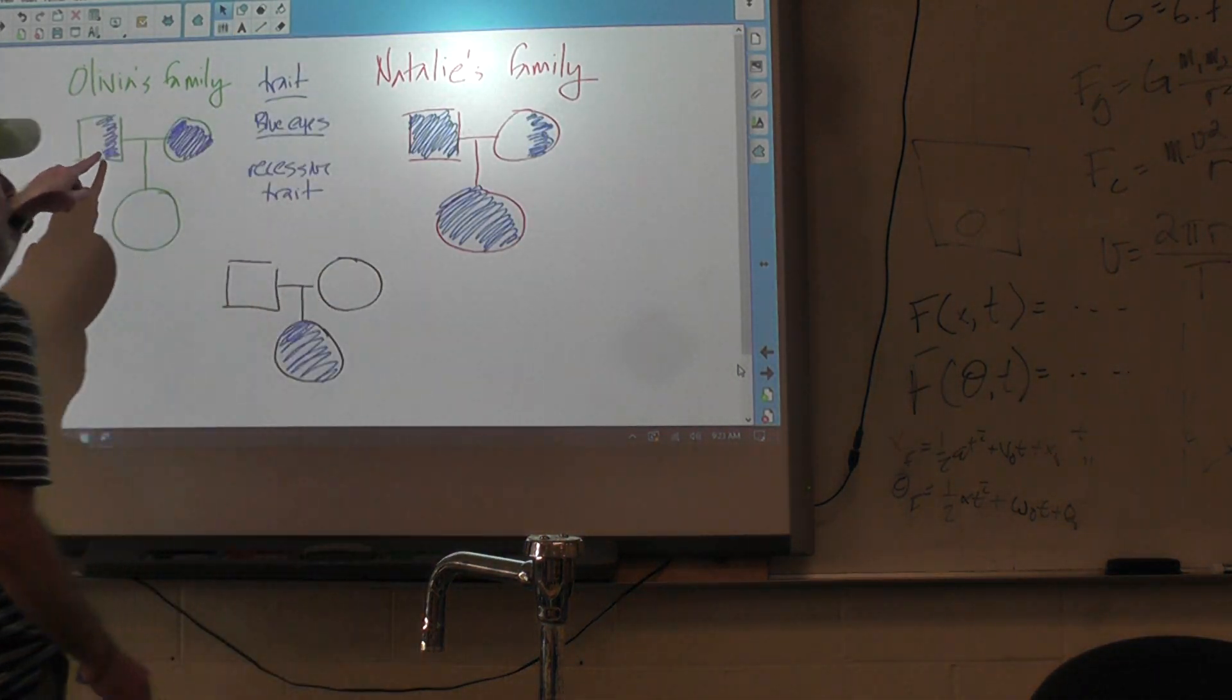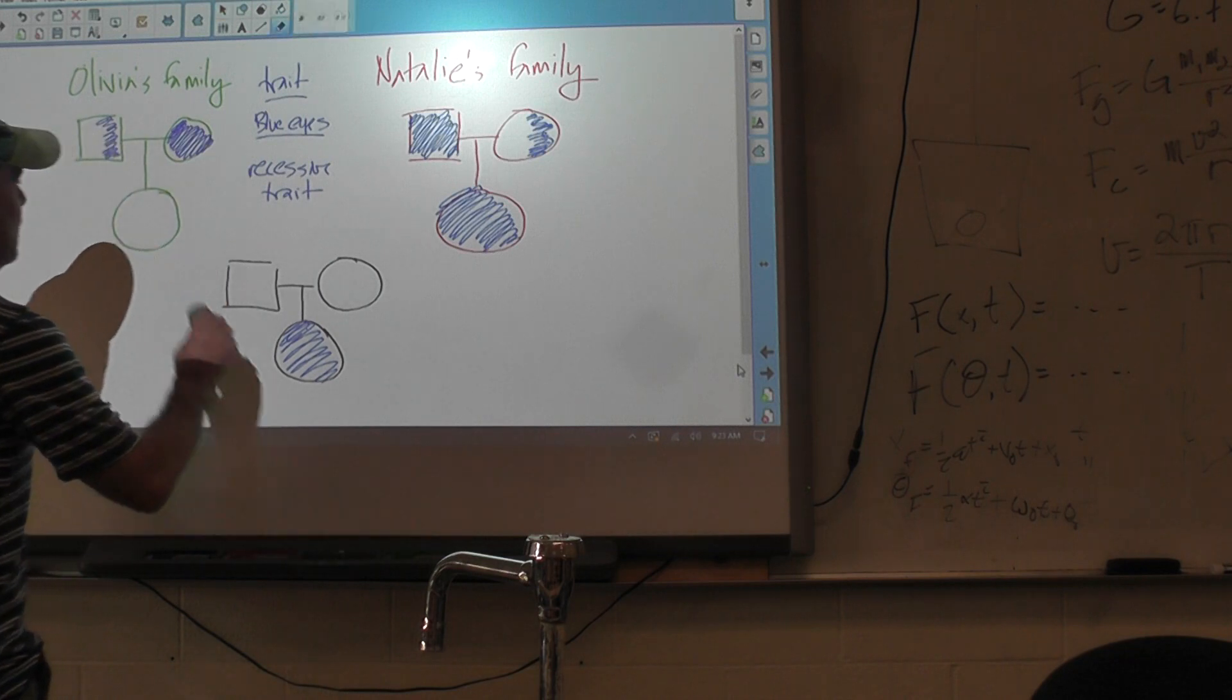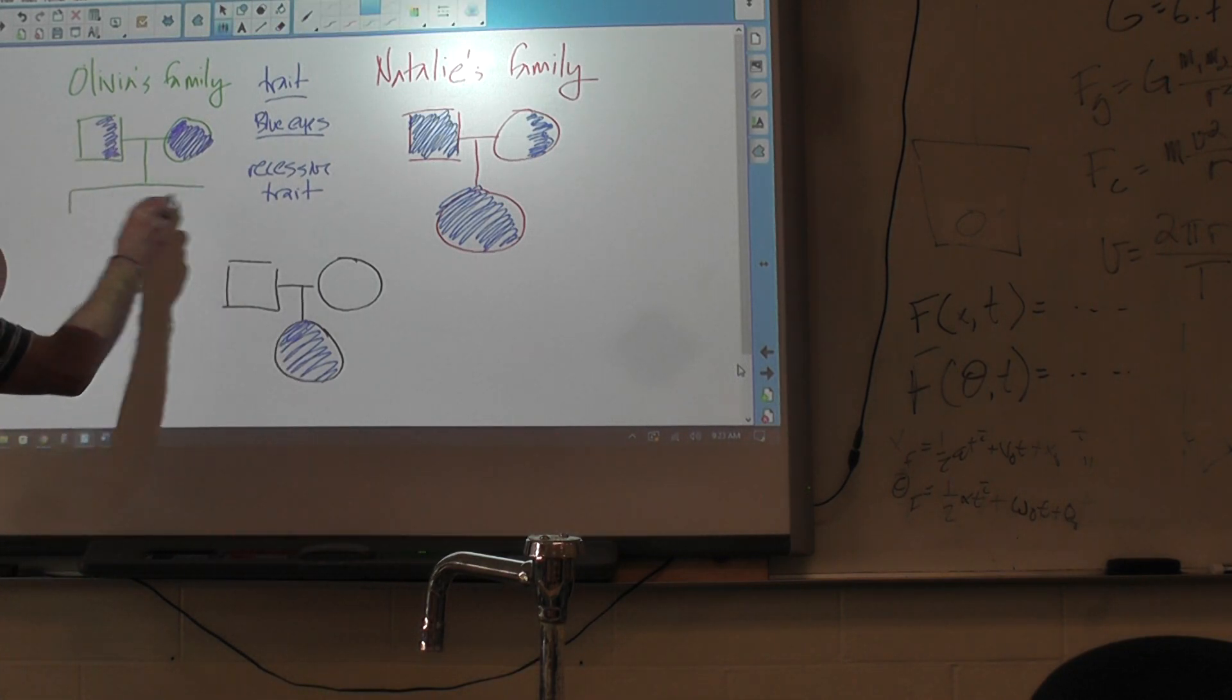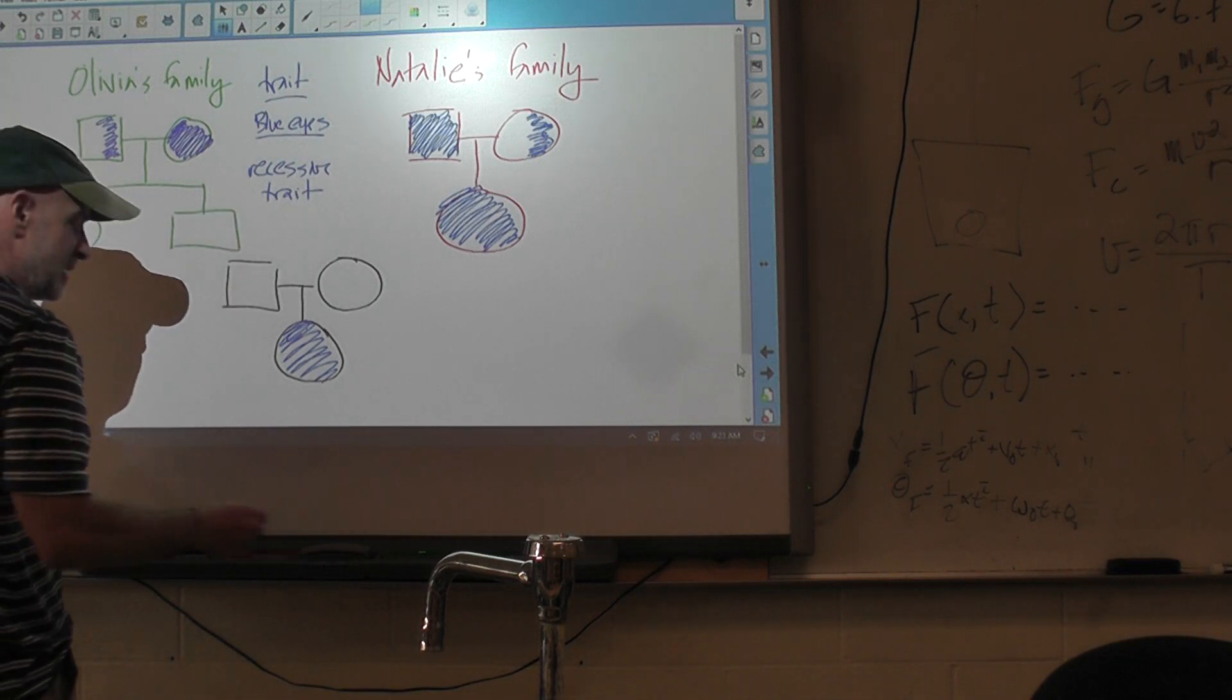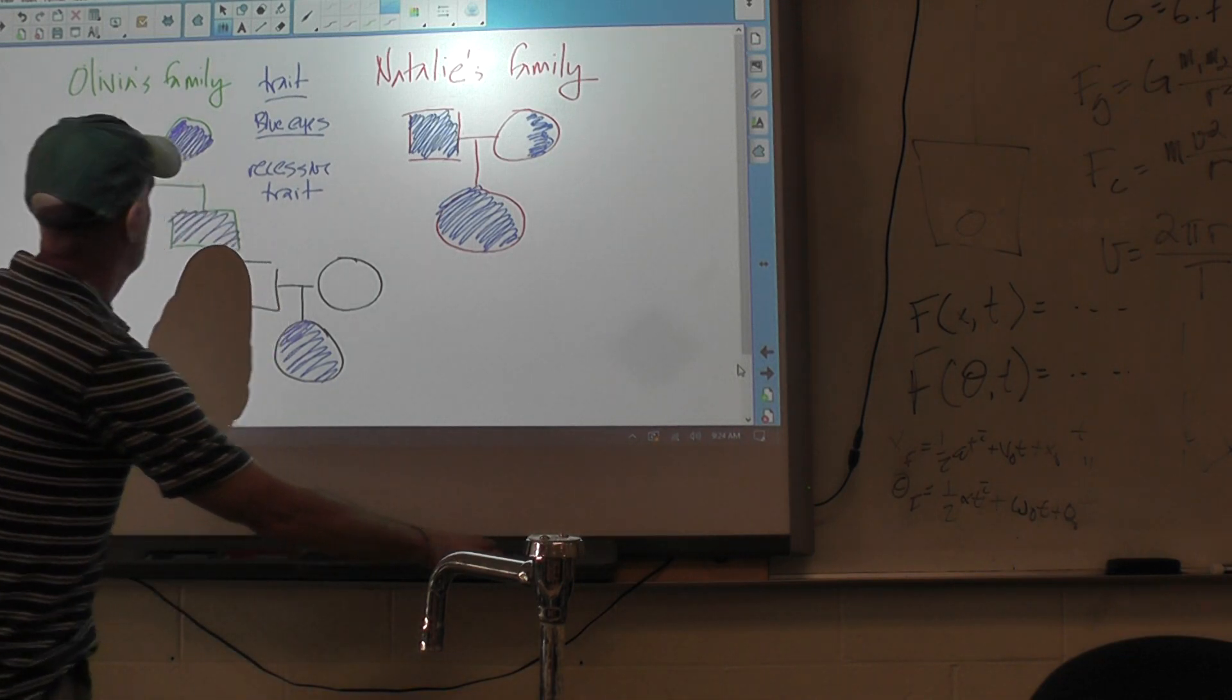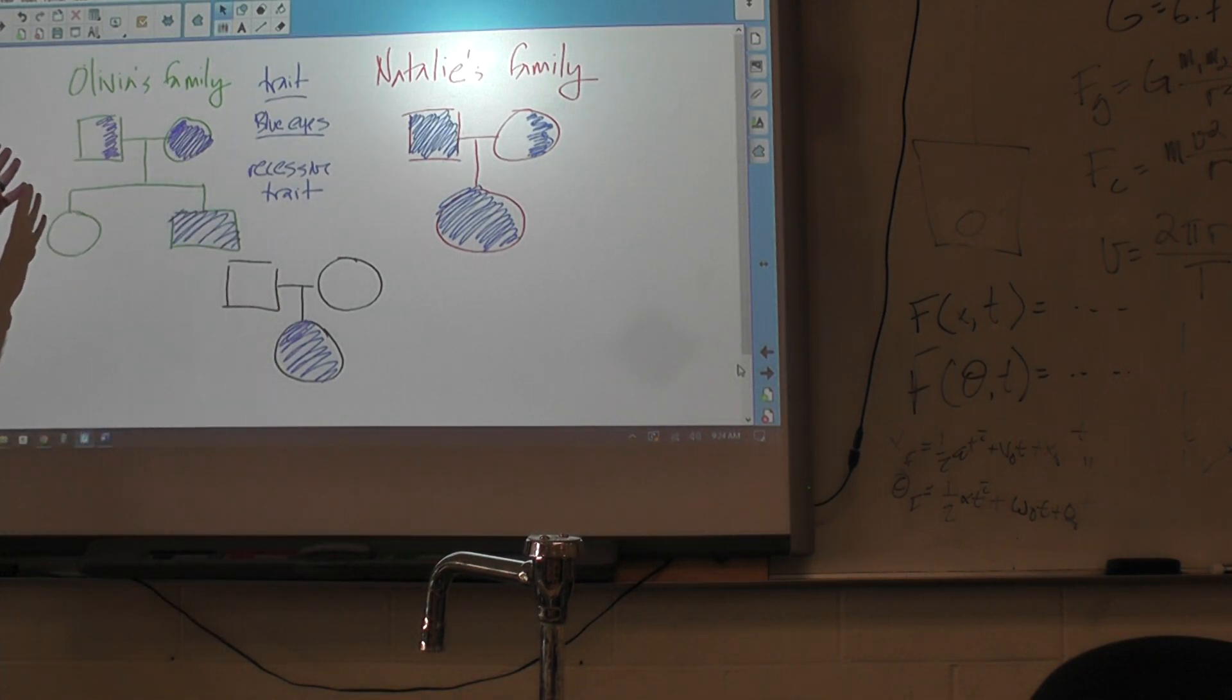This one, we only know because we actually have more data. Right? We have another family member. Who has blue eyes? Brother or sister? My brother. Okay. So we had this piece of information as well. So that allowed us to determine that her dad has to be heterozygous.